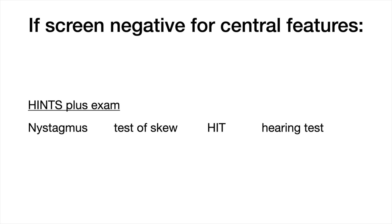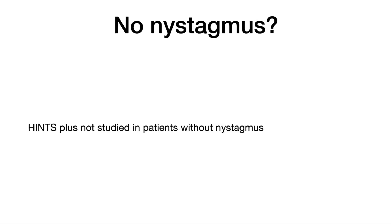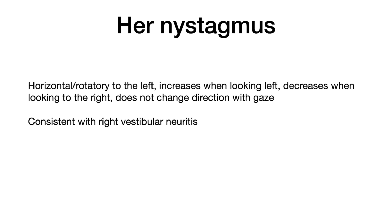All four components must have a peripheral result in order to call the overall HINTS-Plus exam peripheral. The first component is nystagmus — a spontaneous nystagmus must be present to apply the HINTS-Plus exam. Looking straight ahead, it's horizontal with the fast component beating to the left. When she looks to the left, the magnitude increases; when she looks to the right, it decreases, but is still beating to the left. There's no vertical nystagmus when she looks up. This is a HINTS-Plus peripheral result, typical of vestibular neuritis. If the nystagmus changed direction depending on gaze direction, that would be a HINTS-Plus central result.